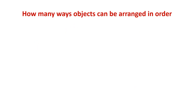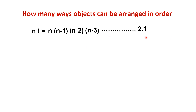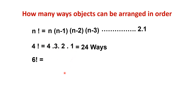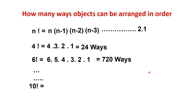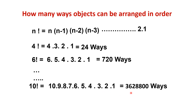So we conclude: in how many different ways can N objects be arranged in order? It is N factorial, which equals N into (N−1) into (N−2) into (N−3) and so on. For example, 4 factorial = 4 into 3 into 2 into 1 = 24 ways. Similarly, 6 factorial = 6 into 5 into 4 into 3 into 2 into 1 = 720 ways. And 10 factorial = 10 into 9 into 8 into 7 into 6 into 5 into 4 into 3 into 2 into 1 = 36,28,800 ways.